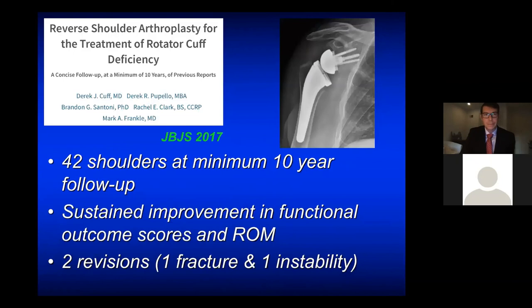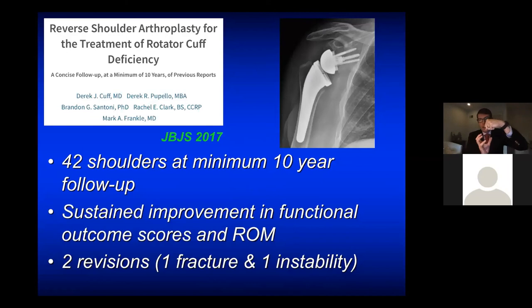Regarding reverse shoulder arthroplasty: in patients who don't have a functioning rotator cuff, a traditional ball and socket replacement is not going to work because the rotator cuff can't keep the head centered in the socket. The French developed an alternative — putting a ball on the socket side and a cup on the humeral side that then rotates around using the deltoid and is therefore not reliant on the rotator cuff. This is a fantastic technique that we've had great success with.